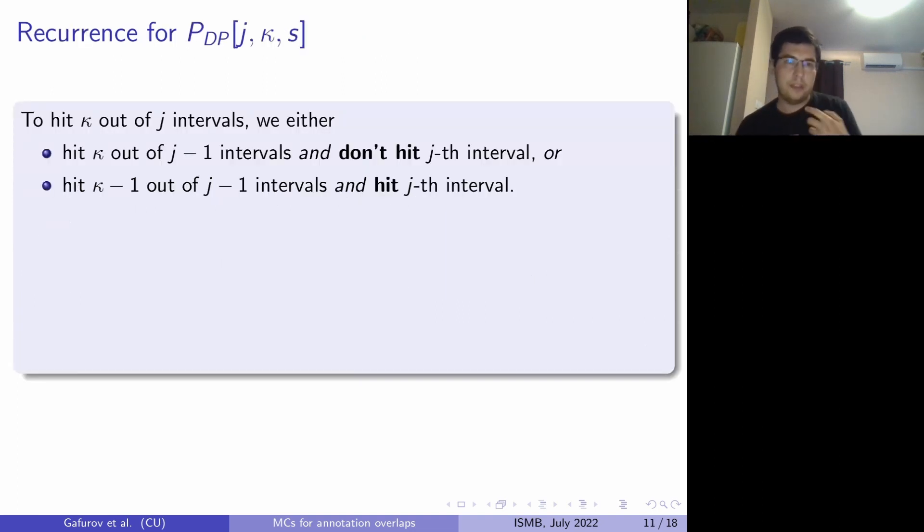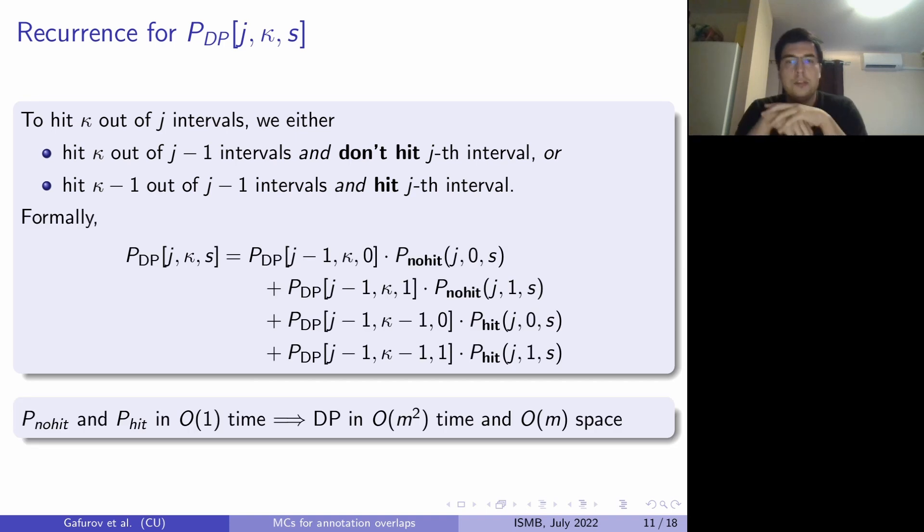Now we have to define the recurrence for that dynamic programming table. And it goes as follows. The idea is that if we want to hit exactly Kappa out of J intervals, we have to either hit Kappa out of J-1 intervals and don't hit the Jth interval, or hit Kappa-1 out of J-1, and then we have to hit the Jth interval. If we would put that formally, it will give us the following recurrence. And the main observation here is that if we are able to compute the probability of hitting or not hitting the Jth interval in constant time, then our dynamic programming could be solved in O(M squared) time and O(M) space.